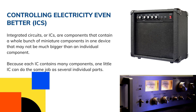An audio amplifier is one example of an IC. You can use an audio amplifier to increase the power of an audio signal. For example, if you have a microphone, its small output signal is fed through an audio amplifier to make a strong enough signal to power a speaker. Another type of IC used in electronic projects is a microcontroller.